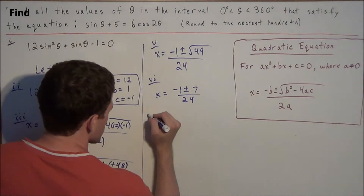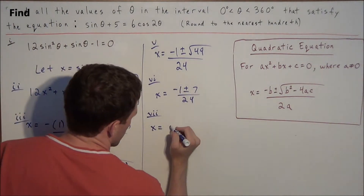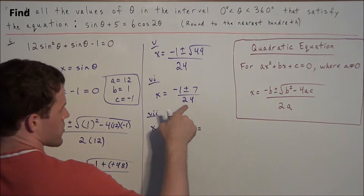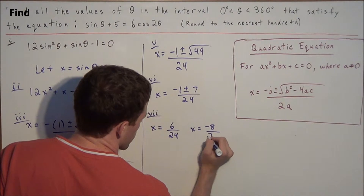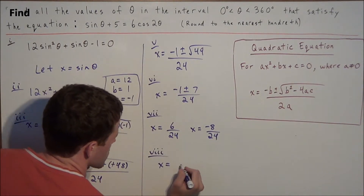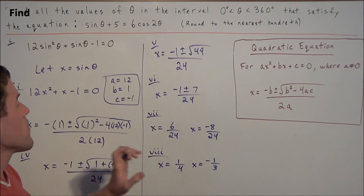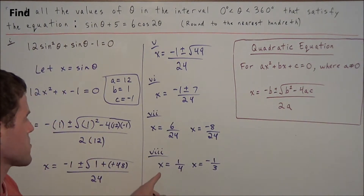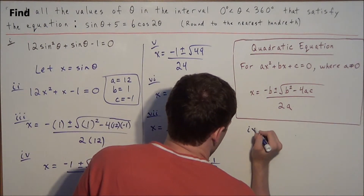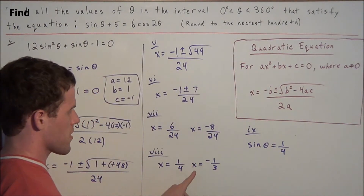We now have two possible roots. For the plus case: x equals negative 1 plus 7 over 24, which is 6 over 24, simplifying to 1/4. For the minus case: x equals negative 1 minus 7 over 24, which is negative 8 over 24, simplifying to negative 1/3. Substituting back, we have sine theta equals 1/4 and sine theta equals negative 1/3.